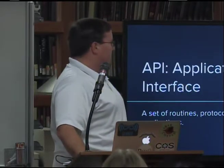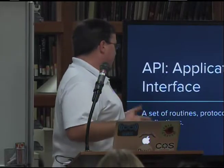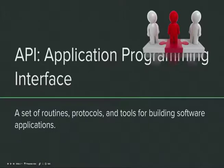An API is a set of routines, protocols, or tools for building software applications. A good way to think about it is as middleware or a middleman, because you want one system to talk with another system. Those systems might be using different architectures and different protocols.